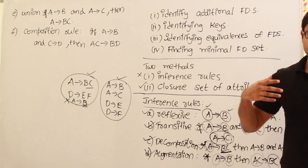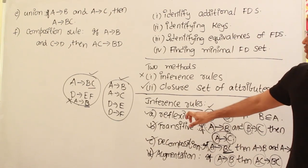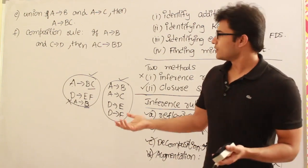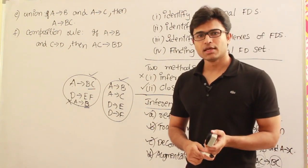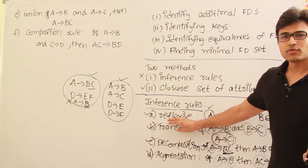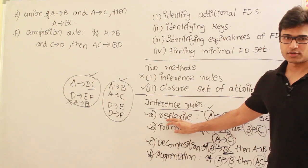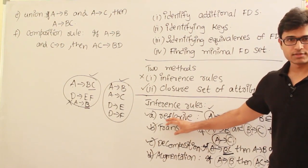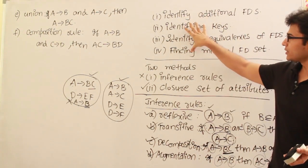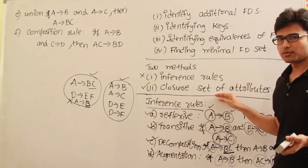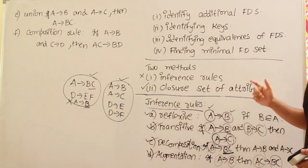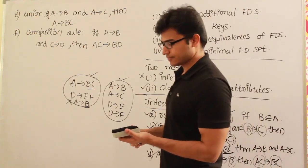By combining these basic rules, a few more derived rules have been defined, though they are less important. You should know all these inference rules in case an exam directly asks about them, and you can write them down based on the name alone. However, we are not going to use inference rules to solve problems — we will do everything using closure set of attributes, which we will cover next.